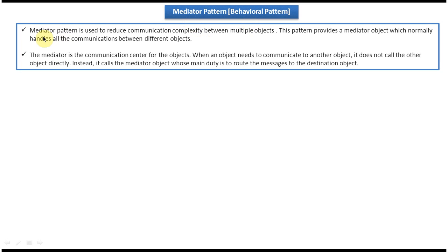This is the first explanation I will just read out. Mediator pattern is used to reduce communication complexity between multiple objects. This pattern provides a mediator object which normally handles all the communication between different objects.